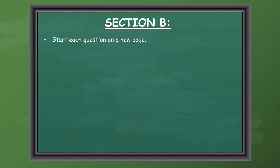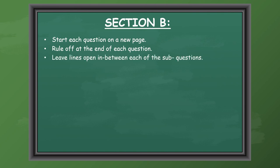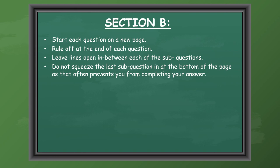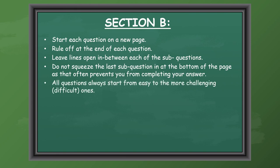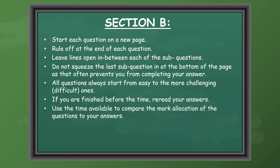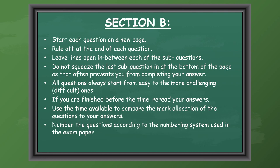Now we're going to look at some general tips for the longer questions in Section B. Start each question on a new page and rule off at the end of each question to help the marker calculate your marks. Leave lines open between each of the sub-questions and do not squeeze the last sub-question in at the bottom of the page. All questions always start from easy to the more challenging. If you are finished before the time, reread your answers and compare the mark allocation to make sure you have written enough. Number the questions according to the numbering system used in the exam paper.